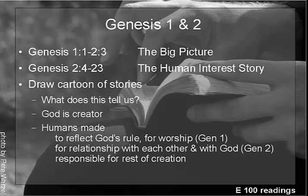You also discover that there is a strong emphasis in both chapters on why humans are made. In chapter one, it's to reflect God's rule — we're made for worship, and we're made as partners with God and with each other. And in chapter two it's for relationship with each other and with God, though for the 'with God' part you probably need to read on into chapter three, which you'll be getting tomorrow. So in both chapters, notice also that humans have a special responsibility for the rest of creation. These chapters tell us that we are special — it's not just speciesism — we're special, but we're caretakers and not owners of the rest of creation.